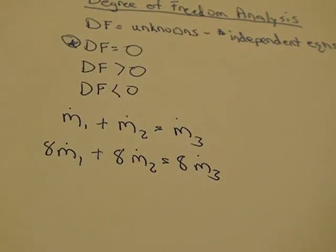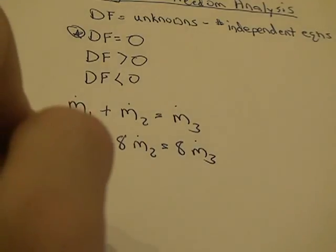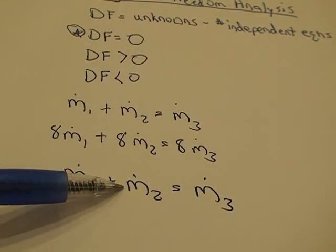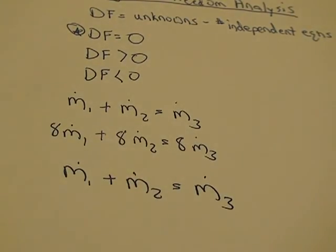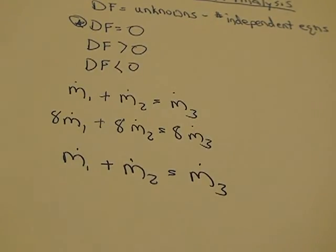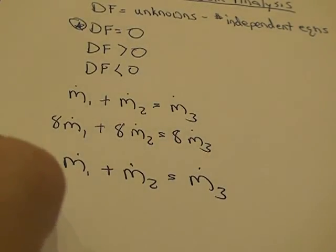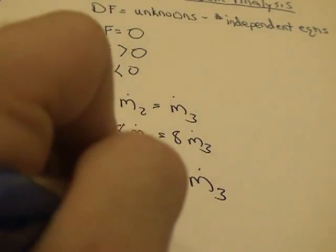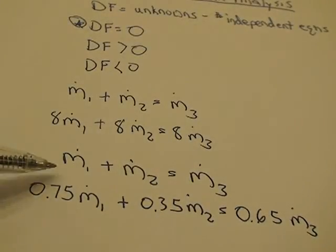Now, another example might be if you have an overall mass flow rate equation, like we had before. Mass flow rate one plus mass flow rate two equals mass flow rate three. And then you go ahead and do a species balance, maybe species A, or there's two species, A and B, and you know the mass fraction of A, which is 75%, which would be 0.75 M1 plus, say, 35%, so 0.35 M2 equals 0.65 M3.